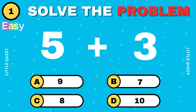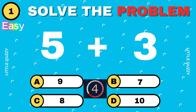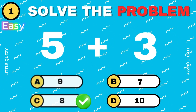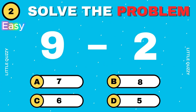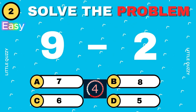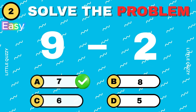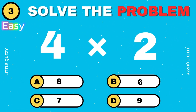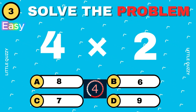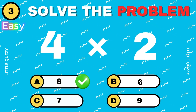What is 5 plus 3? The correct answer is 8. What is 9 minus 2? The right answer is 7. What is 4 times 2? The right answer is 8.